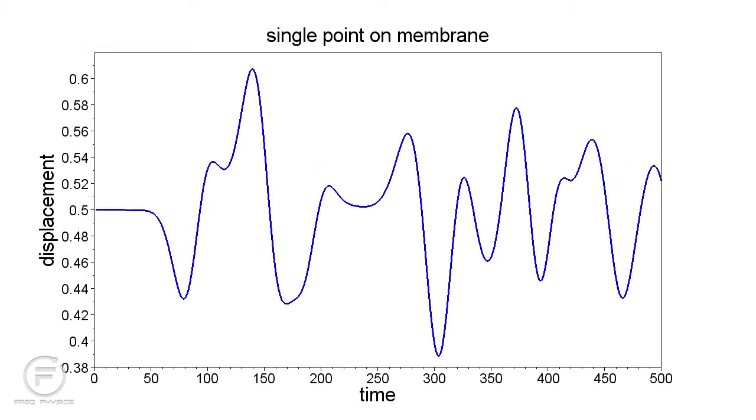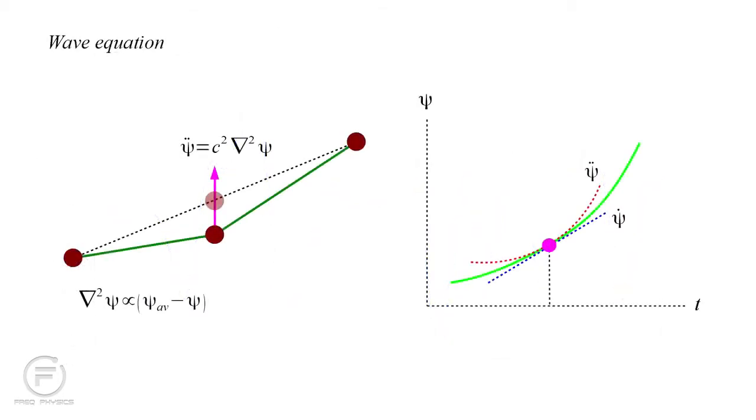So the wave equation tells us that when the field value at a point is not in equilibrium with its neighbors, the plot of that field value versus time will have a corresponding curvature. The greater the disequilibrium, the greater the curvature. If the field value is less than the equilibrium value, the curvature will be upward, as shown in this figure.